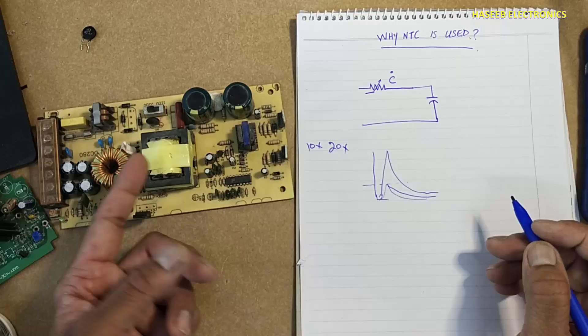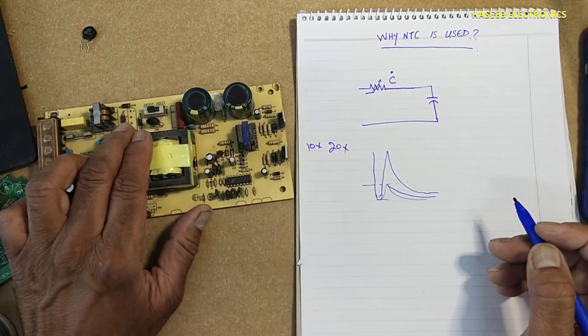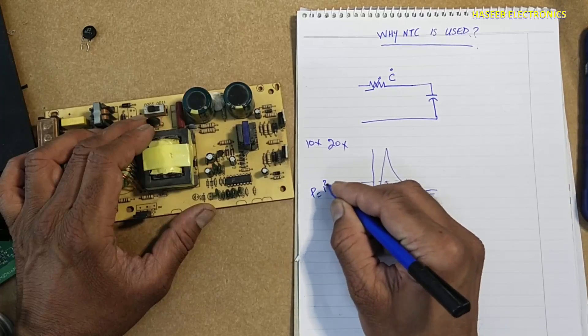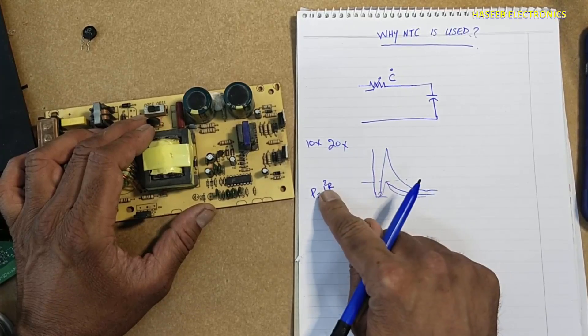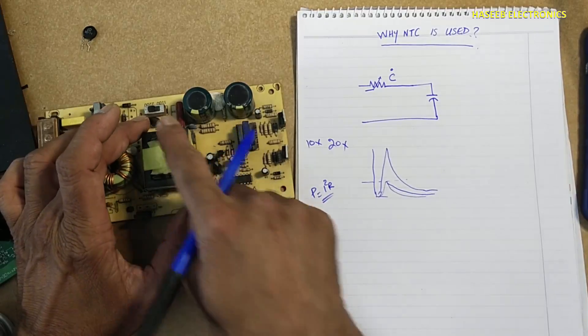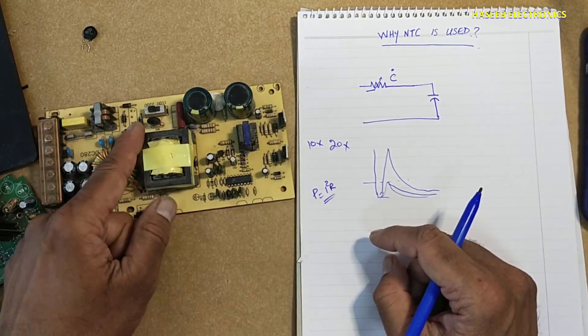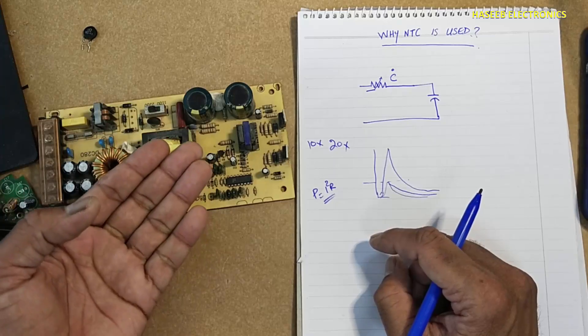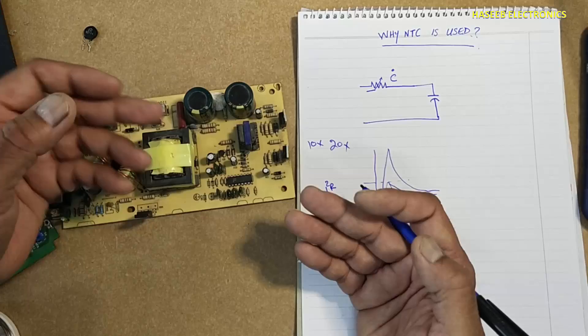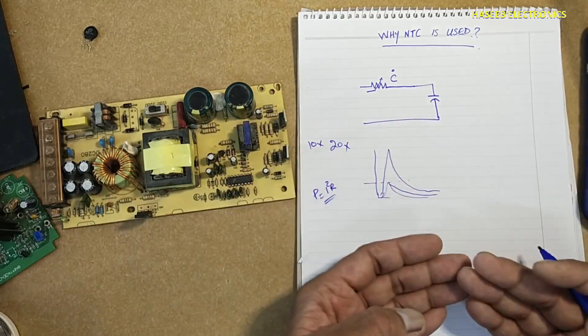When the current will start to flow, we know it will produce power. When the current will flow and there is resistance 5 ohms, it will produce power. When it will produce power, it will become self heated. It is heat up, its resistance will become to zero line.